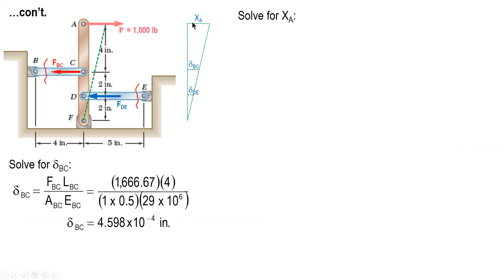To solve for XA, ratio and proportion again involving XA and delta BC. Horizontal over vertical, 8 over 4, equals horizontal delta BC over vertical 4. We substitute the value of delta BC with this one. Solving for XA, the value is 9.2 times 10 raised to negative 4 inches.